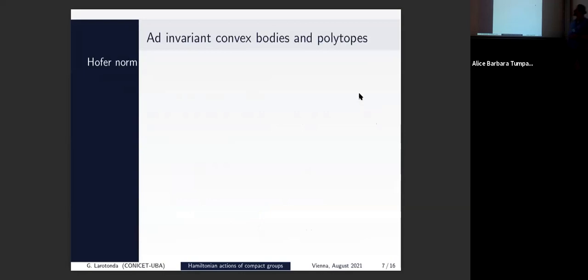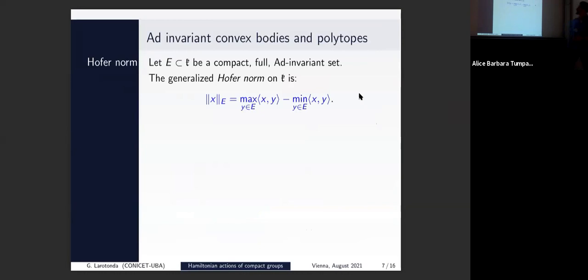Now we start with the main construction. We start with a compact full convex set — 'full' means it absorbs rays, so if you move it around you can generate the whole space. The definition of the generalized norm looks like you're trying to compute the diameter of the object, and by computation you see it equals the norm of the complex convex hull. This seems a bit unnatural for the moment, but it will be connected with something else.